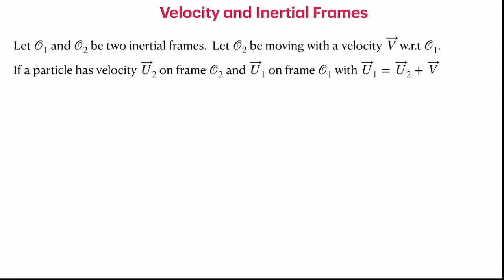Let's look at the law of velocity addition in an inertial frame within Newtonian mechanics. Let O1 and O2 be two inertial frames, with O2 moving with velocity v with respect to O1. It's a relative velocity, so we can assume O1 is at rest and O2 is moving with relative velocity v. If a particle has velocity U2 in frame O2 and U1 in frame O1, then from Newton's law, U1 equals U2 plus v.